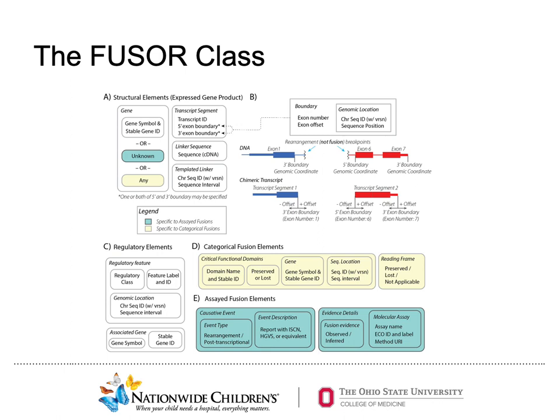Here you can see a figure describing features underlying the Fuser class, a novel data structure whose features were informed by the framework previously described. An important takeaway is that Fuser allows for the representation of both assay fusions and categorical fusions. For those unfamiliar with the concept of categorical fusions, this term describes fusions with shared characteristics, such as N-track fusions. By covering both classes of fusions, the Fuser class allows for fusions to be represented in both clinical and research-based contexts, respectively.